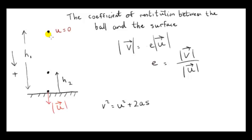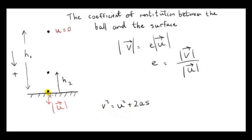We neglect air resistance, and we know that for any object dropped near the surface of the earth, the acceleration is constant and vertically downwards. So we're dealing with linear motion with constant or uniform acceleration. Here's one of the formulas for that situation, and we're interested in the speed at the end of the journey. That speed is v in this formula.